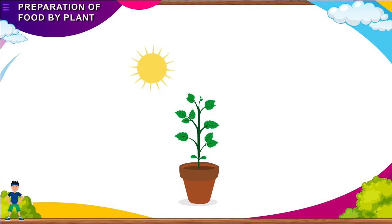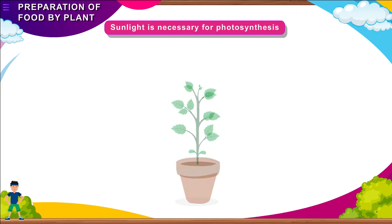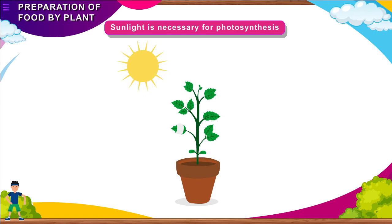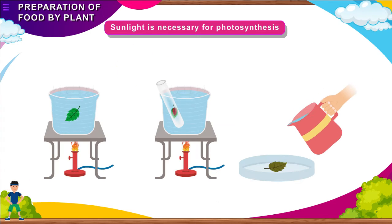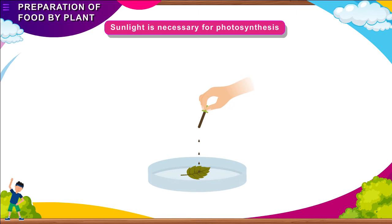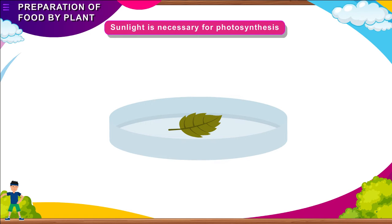Activity: Sunlight is necessary for photosynthesis. Take a potted plant. Cover a leaf of the plant with a piece of paper. Leave the plant in sunlight for 3–4 days. Pluck the leaf from the plant and test it for starch as in the previous activity. What do you observe? The leaf does not turn blue-black because the leaf could not prepare food in the absence of sunlight. This shows that sunlight is necessary for photosynthesis.